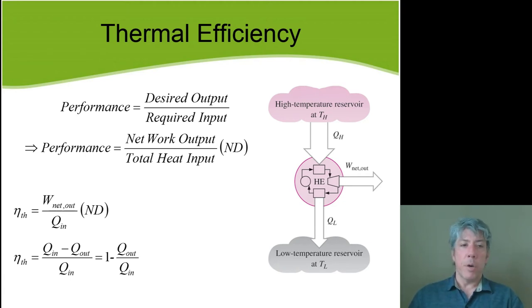Now, since the network output from a heat engine has to be the difference between the heat flows, Q_H and Q_L, then instead of writing network in the numerator, we can write Q_in minus Q_out. If you consider these as fractions, Q_in over Q_in is just one, and then we're left with minus Q_out over Q_in.